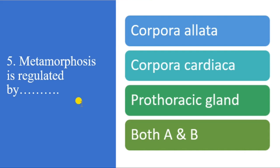The next kind is parametabola, otherwise called gradual metamorphosis. Here the immature stage is called a nymph, and there are only three stages: egg, nymph, and adult. The nymph and adult share the same habitat — for example cockroaches, where both nymph and adult share the same territory.